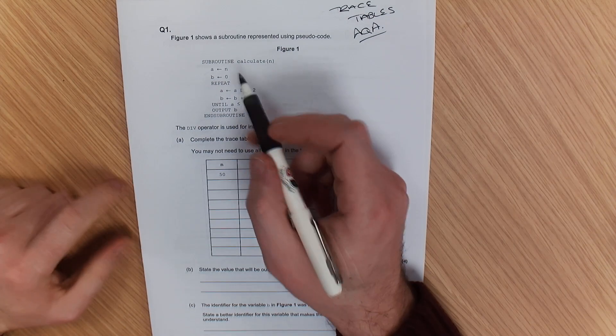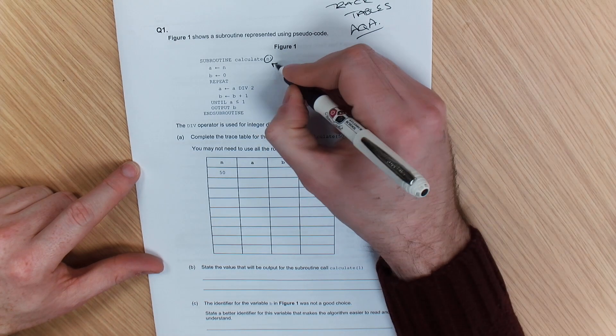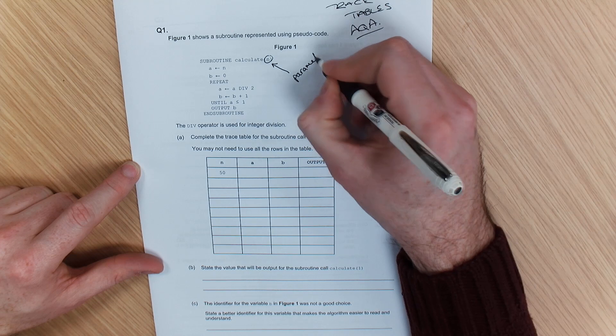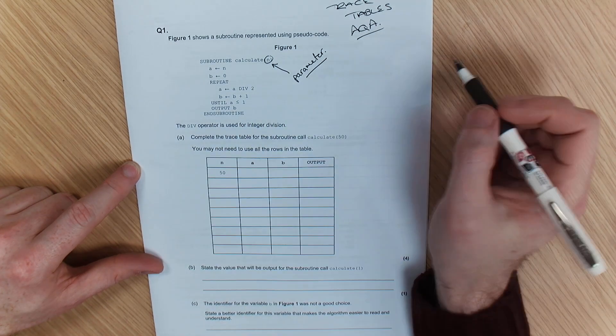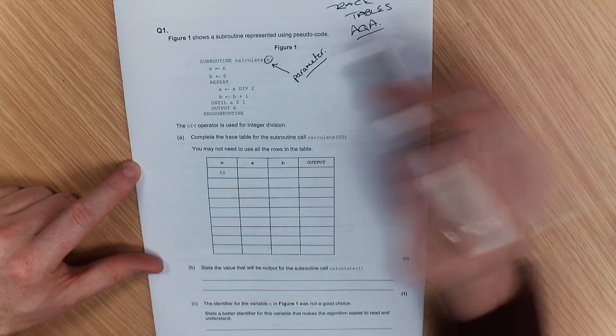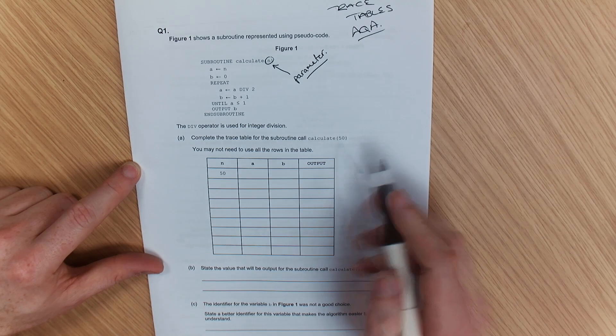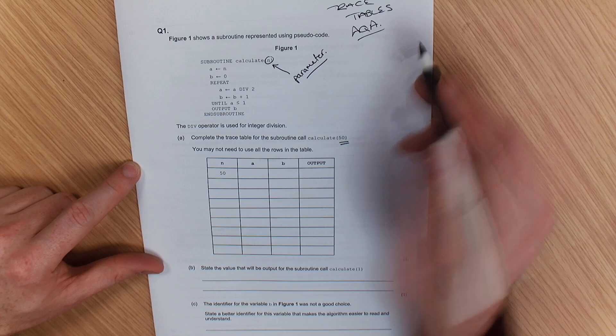So what we've got here is our subroutine, calculate. Now one thing to bear in mind here is this subroutine has got a parameter passed into it. That means whoever uses this subroutine, a value is usually passed in, and in this case it's going to be 50 for this question, but we're just going to have a look at how this works there.